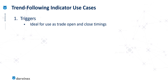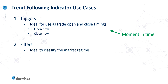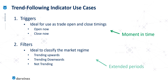The two use cases we're going to consider for trend following indicators are: firstly, triggers, where they can be used to help inform when we open or close a trade — these are moment-in-time events that come from the information the indicator provides. The second use case is filters, which is one of the techniques we can use to classify the market regime — for example, is it currently trending upwards, downwards, or not trending at all? The information provided here can persist for extended periods while those conditions remain in play.